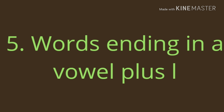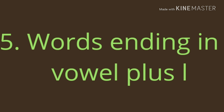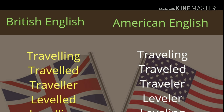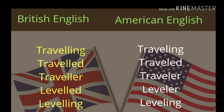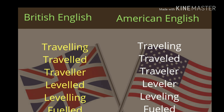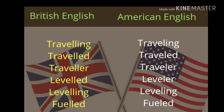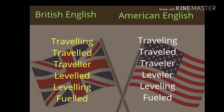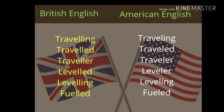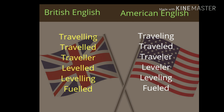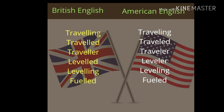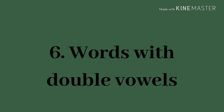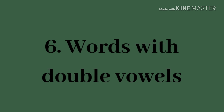The next category is words ending in a vowel plus L — meaning if a vowel comes before L. For example, take the word 'travelling': in British English we use double L, while in American English we use a single L. Other examples include: travelled, traveller, levelled, levelling, and fuelled — all use double L in British English.